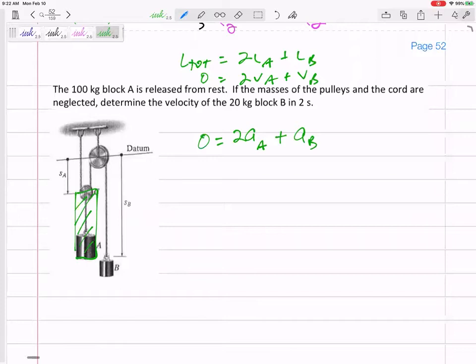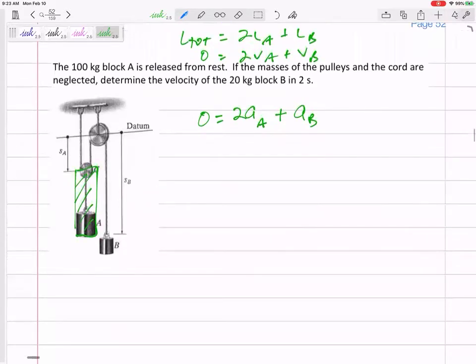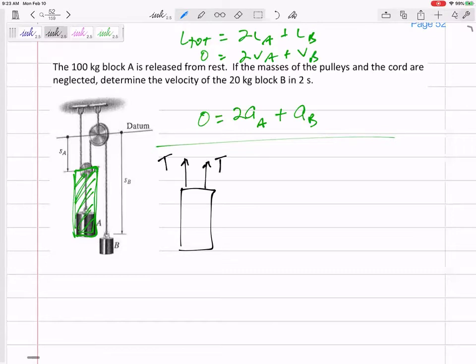Now I'm gonna draw free body diagram for block A, free body diagram for block B. Let's start with A. When I box these things in together I'm gonna draw the free body diagram for that right there and I'm gonna put these, see I've got two tensions pulling that object up right and I've got the weight of A 100 times 9.81 pulling that down.